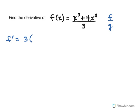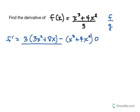Then we multiply by the derivative of the numerator, so that would be 3x squared plus 8x minus, now we keep the numerator, and then multiply by the derivative of the denominator. But notice, the derivative of 3 is simply going to be 0, so that quantity after the minus pretty much zeros out.